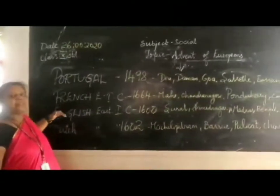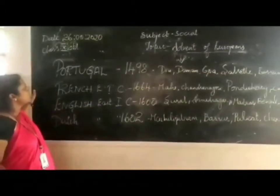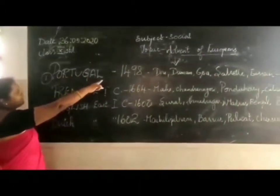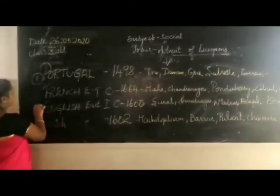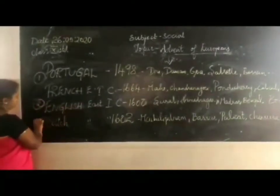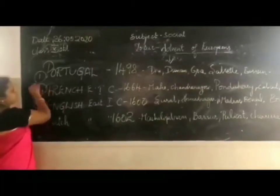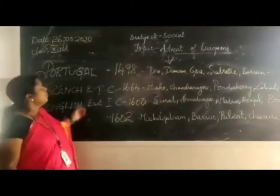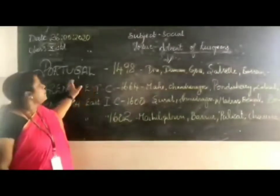The four European countries that landed in India, in order, were: first, the Portuguese, with the date being 1498; second, the English East India Company; third, the Dutch East India Company; and fourth, the French East India Company. The Portuguese came through Vasco da Gama.